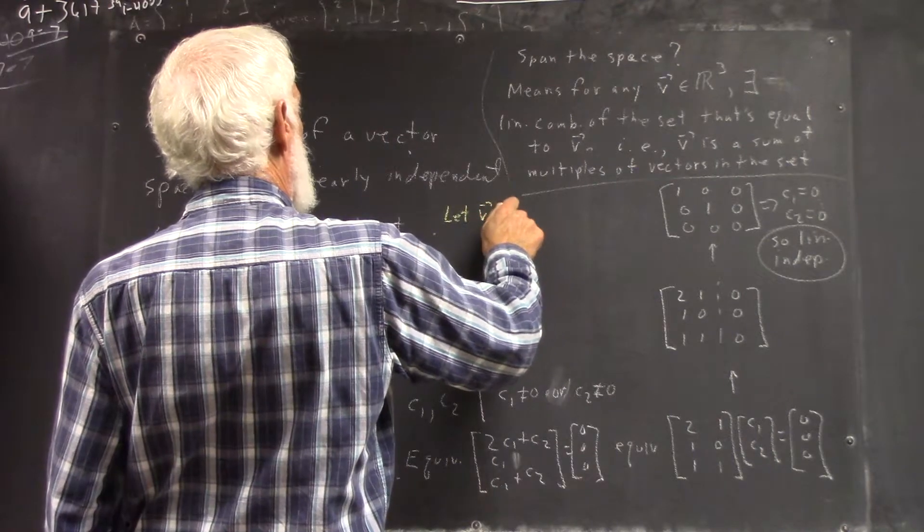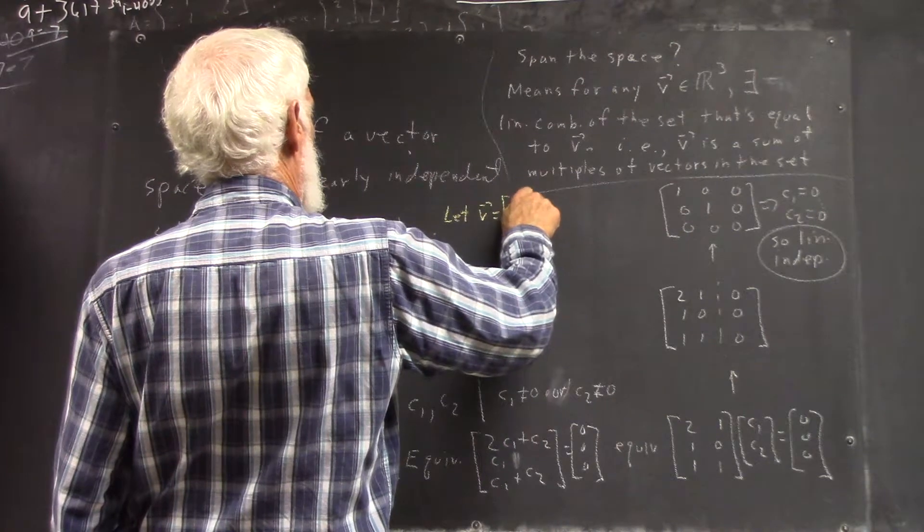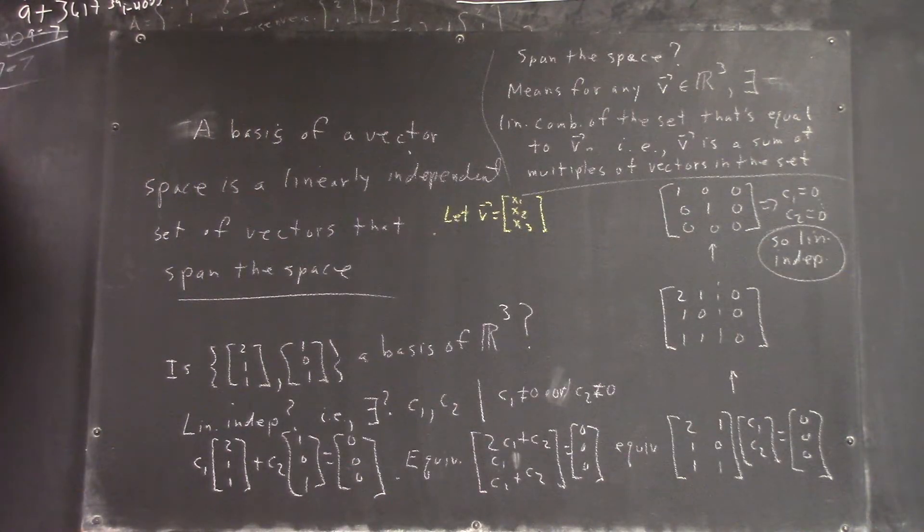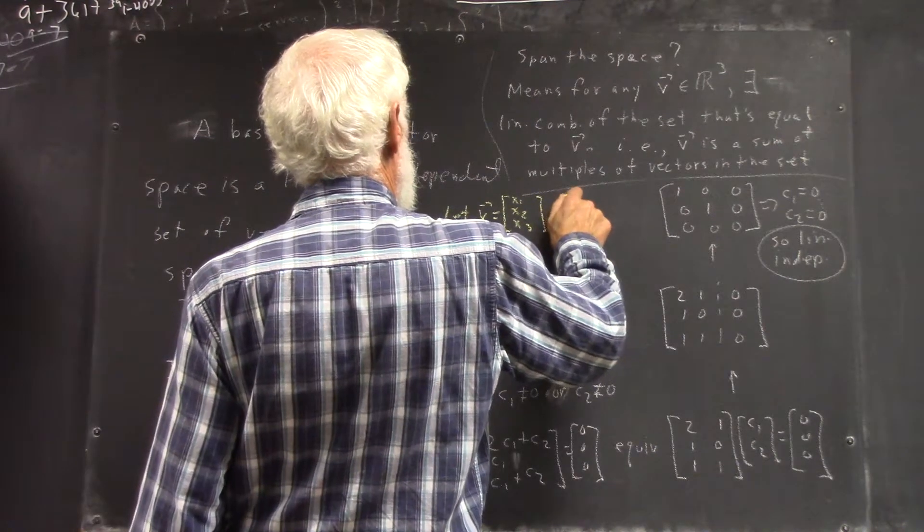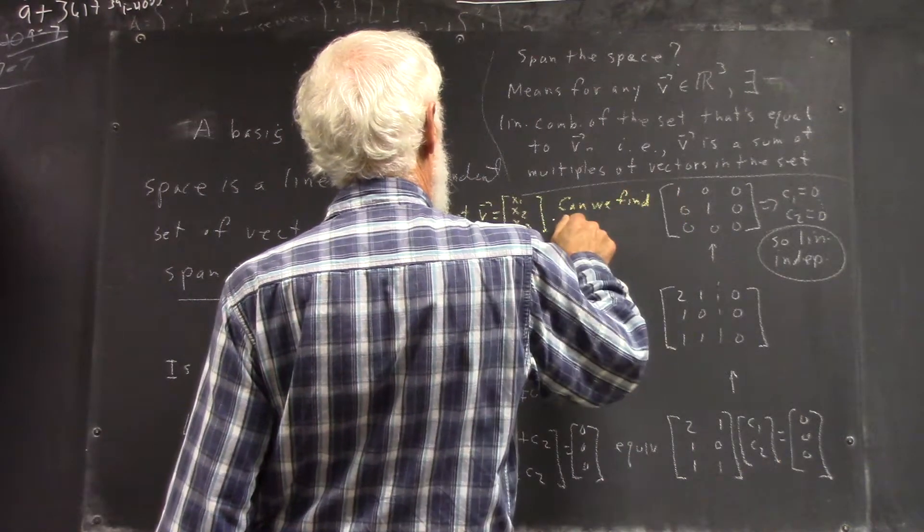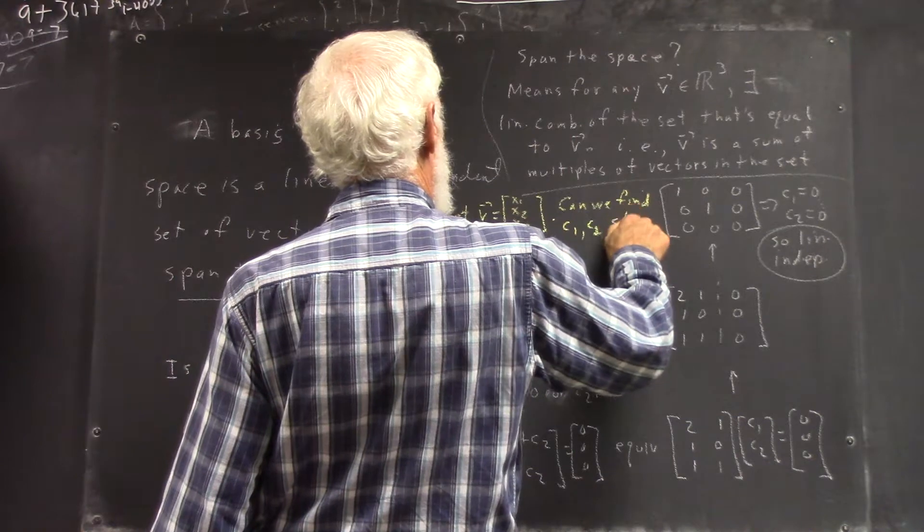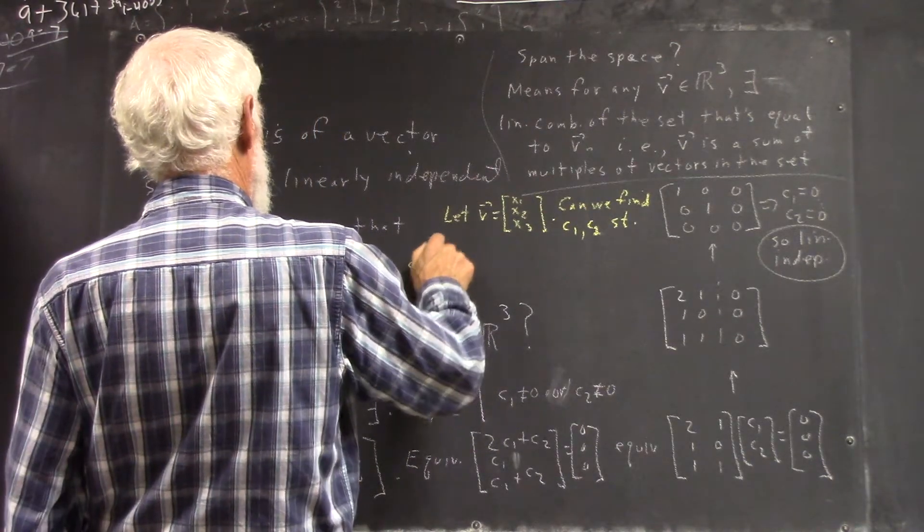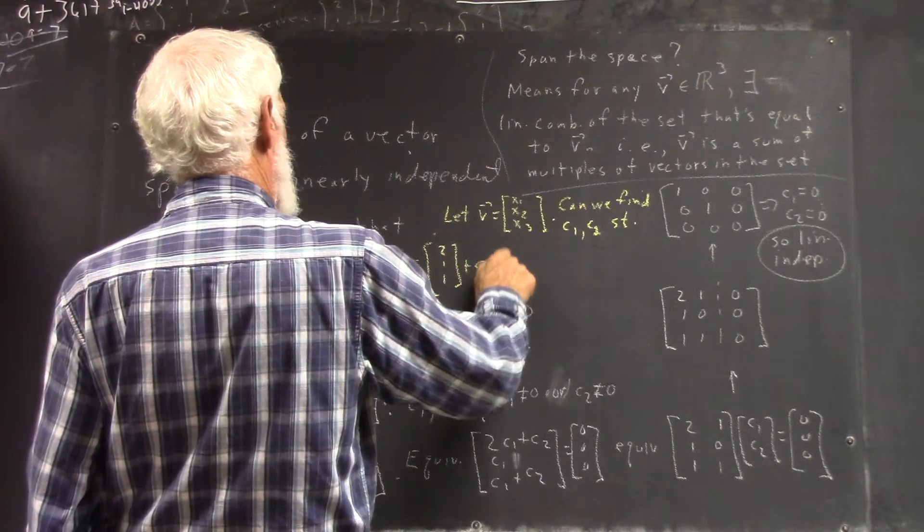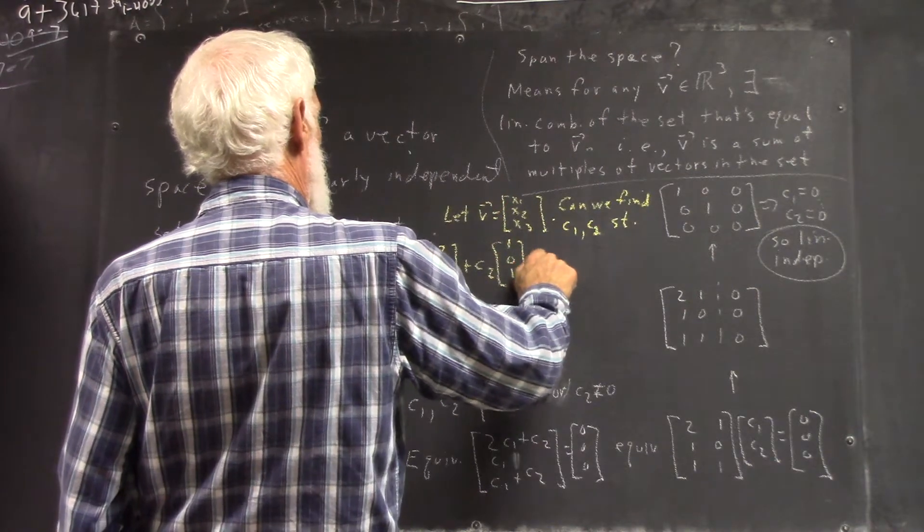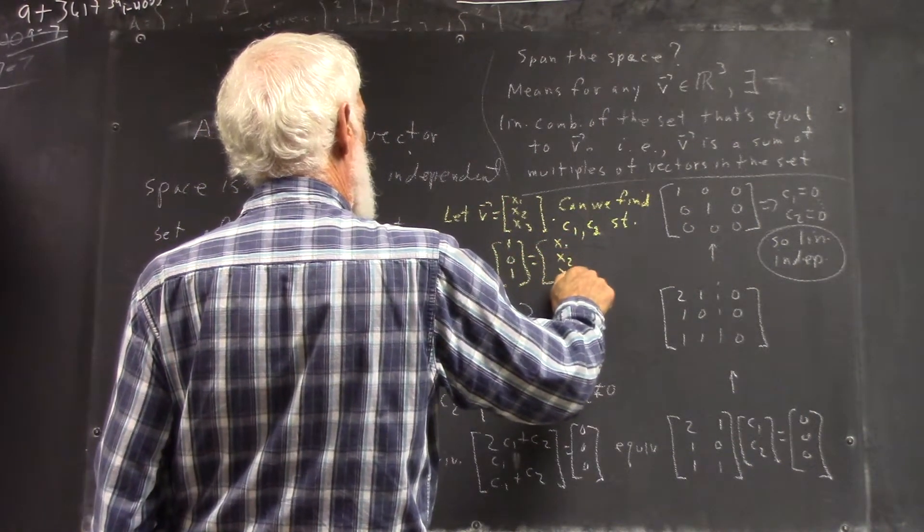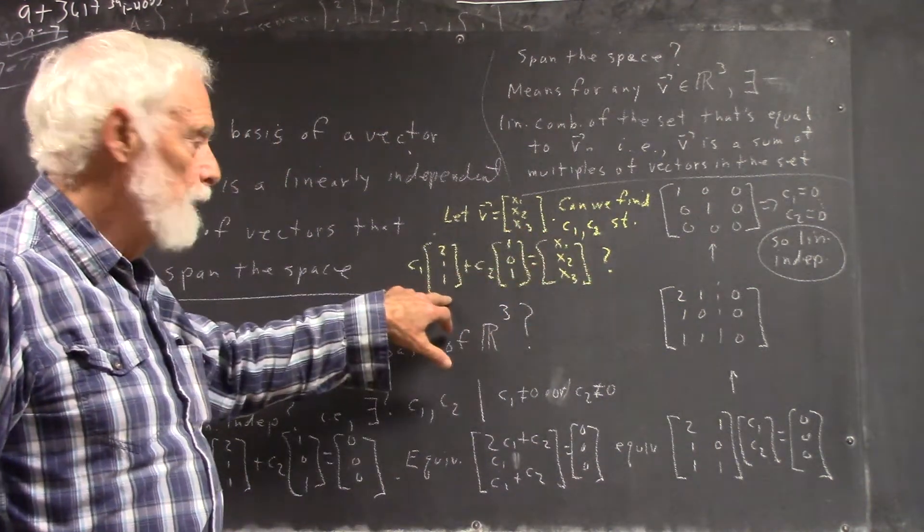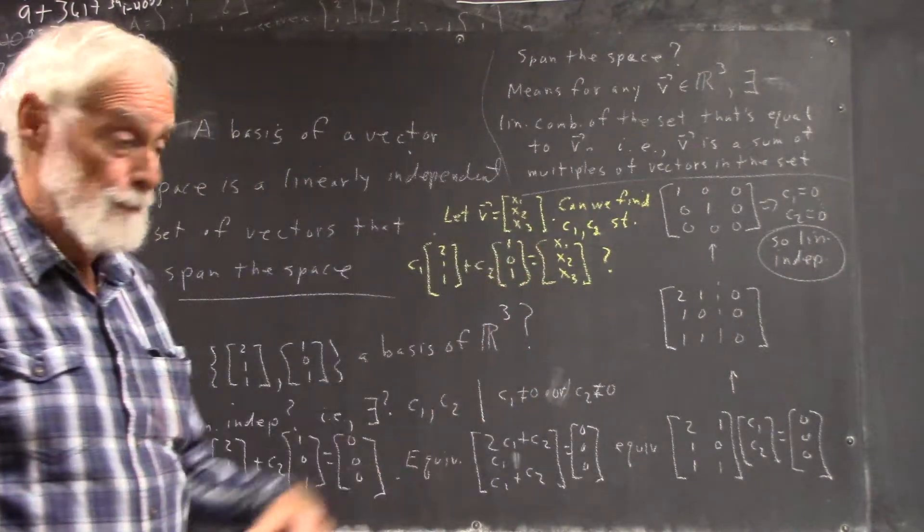This means that, well, let v be the column vector x1, x2, x3. We find c1 and c2 such that c1 times this vector plus c2 times this vector equals this one.